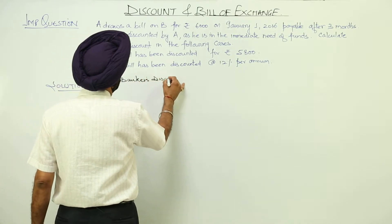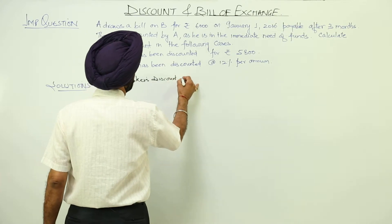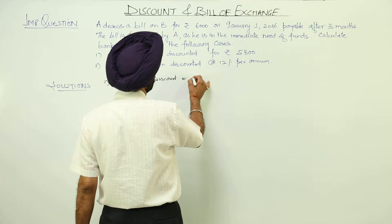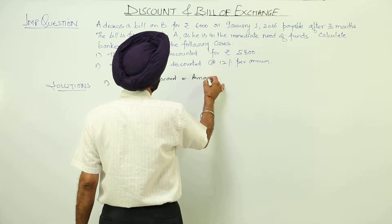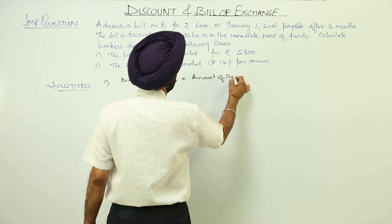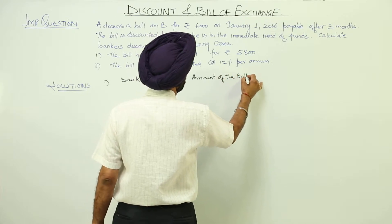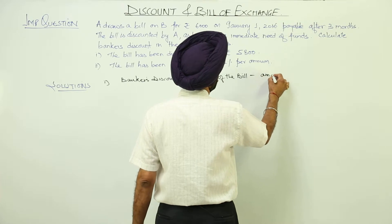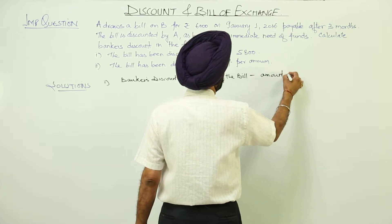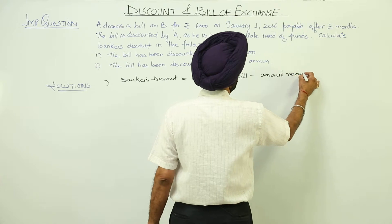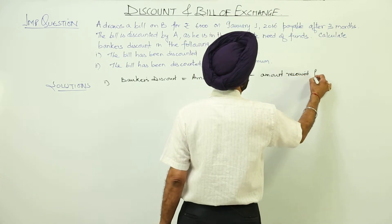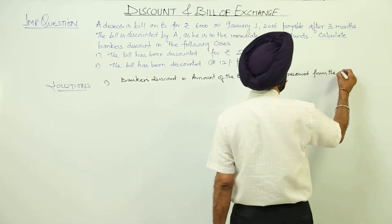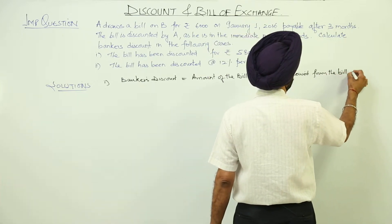Number 1: Banker's discount. Now how to calculate banker's discount? It is the amount of the bill minus the amount received from the bill discounted.